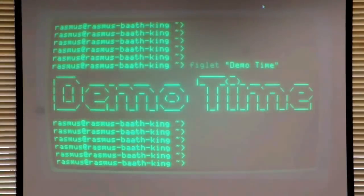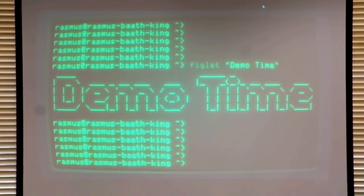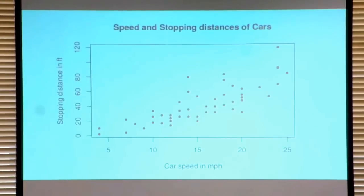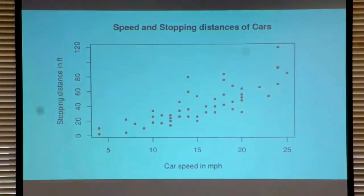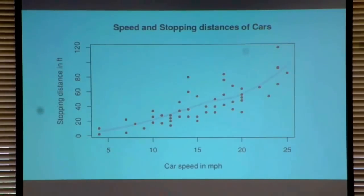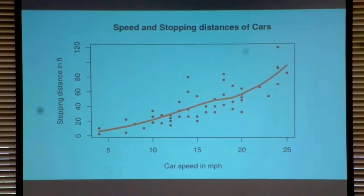So those were some simple examples of what you can do with bayesboot. You can also do more advanced things — say you have a scatter plot and you want to fit a smooth to it, like a LOESS fit, and you can use bayesboot to get at the uncertainty in that LOESS fit.